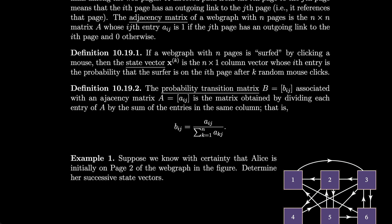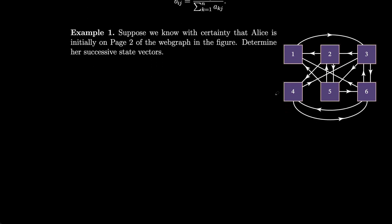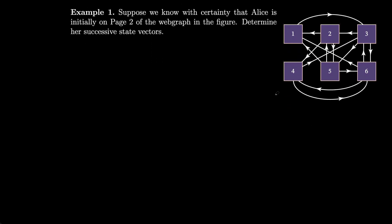So that means that bij is equal to aij divided by the sum of all of the akjs. How about we do an example to demonstrate this a little bit better. So suppose we know with certainty that Alice is initially on page 2 of the web graph in the figure. Let's determine her successive state vectors. So she starts on page 2, so let's make x0 equal to the vector that puts Alice on page 2. And then x1 is the vector we get by multiplying x0 by b. So that would be bx0.